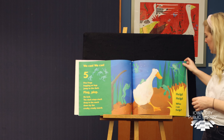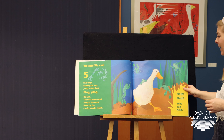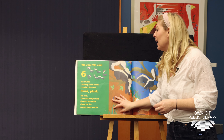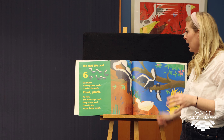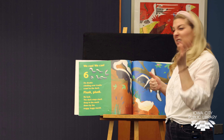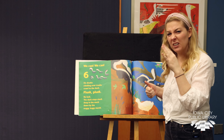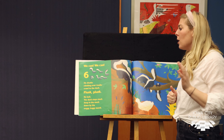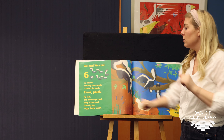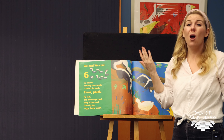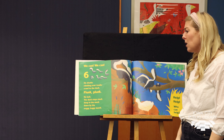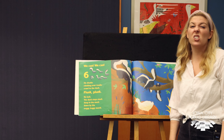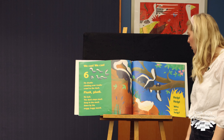What does the duck say? Help, help. Who can help? We can, we can. We have six skunks — I don't know if I'd want their help. Six skunks climbing over trunks, crawl to the duck — plop, plop. No luck. The duck stays stuck deep in the muck, down by the soggy, loggy marsh.